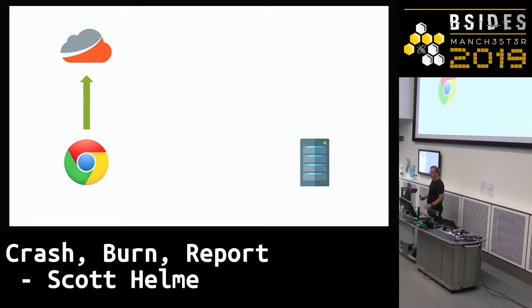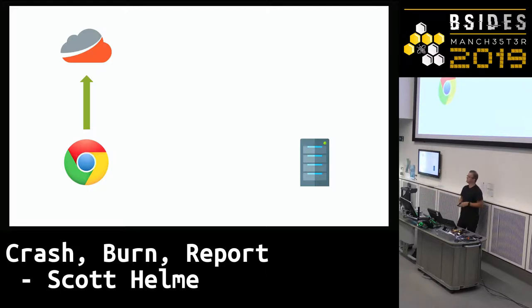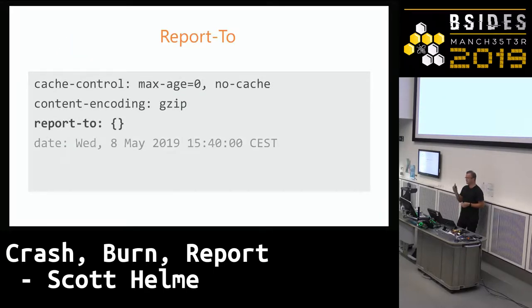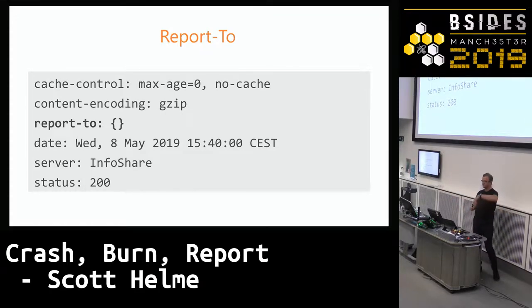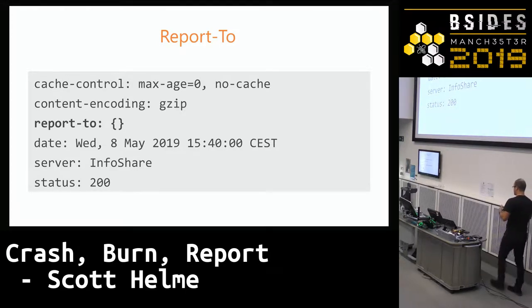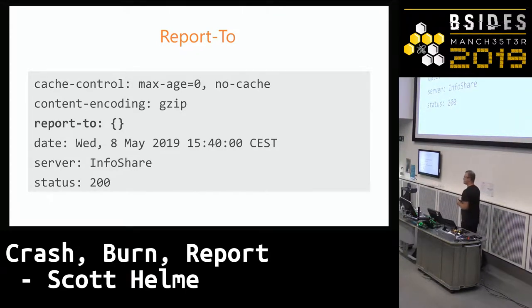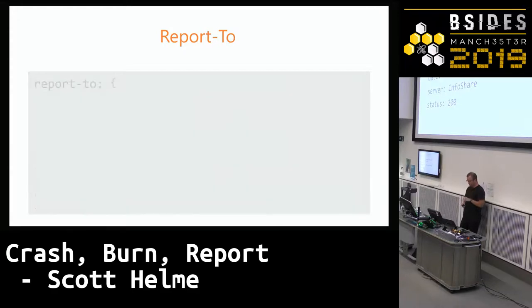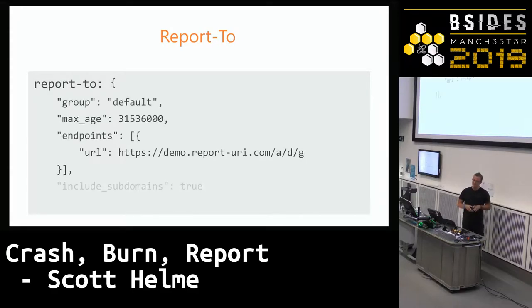You ask the browser by setting an HTTP response header. Alongside standard headers like date, server, content-encoding, and cache-control, you add a new one — the Report-To header. This is how you instruct the browser to send error reports back to you. The header takes JSON content with a group of reporting endpoints. The group needs a name — I've called it 'default'. You can call it whatever you wish.